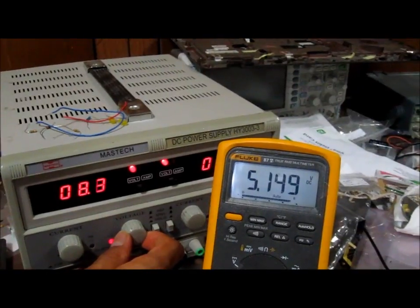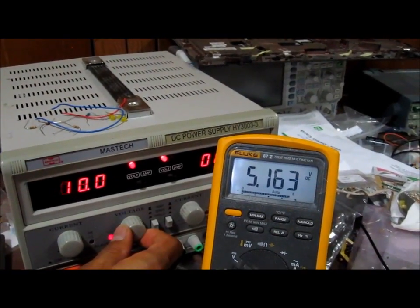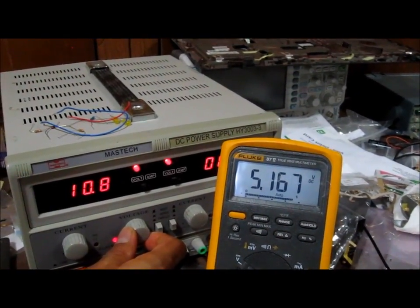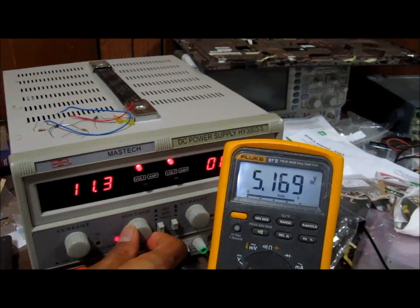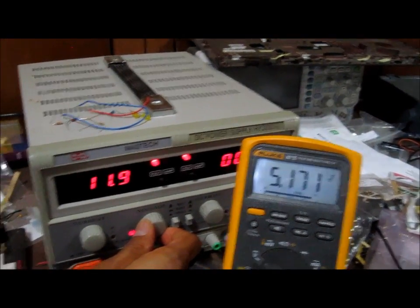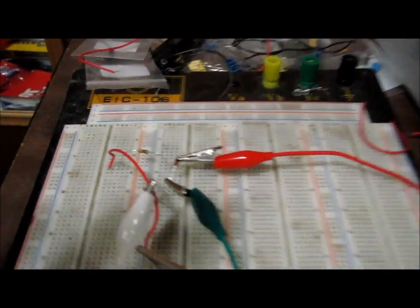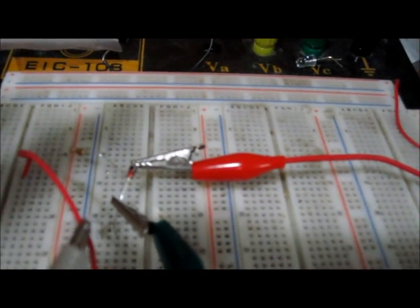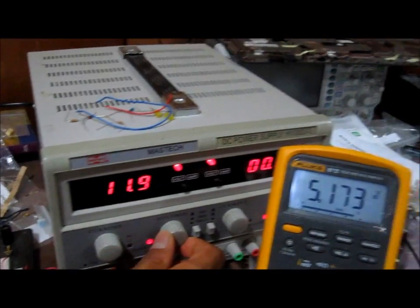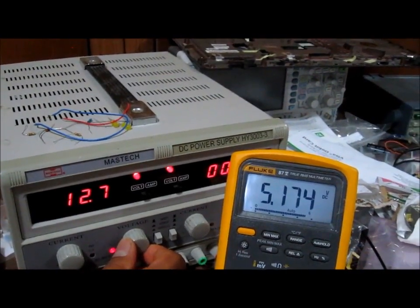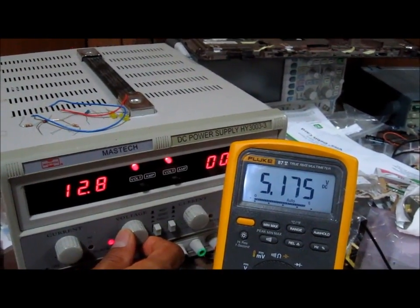Now I'm going to increase the voltage, and you can see the Zener diode is still holding 5.1 volts across it. It's functioning just like a voltage regulator. Even though we increase the input voltage, the output voltage across the Zener diode is staying stable.